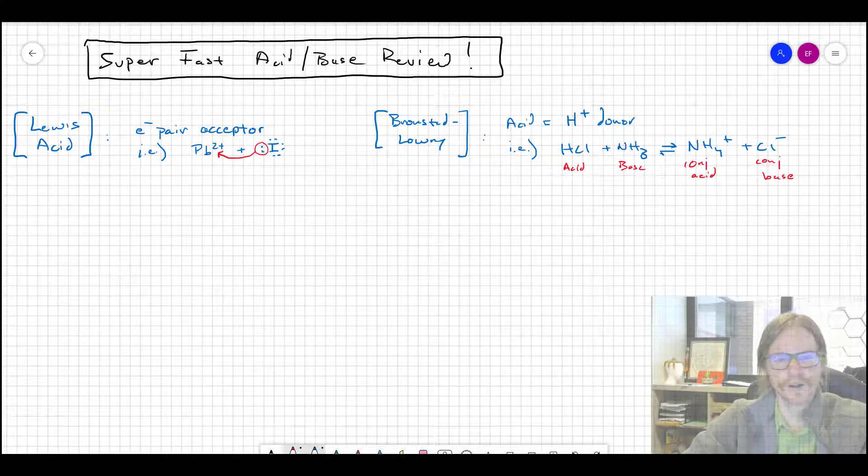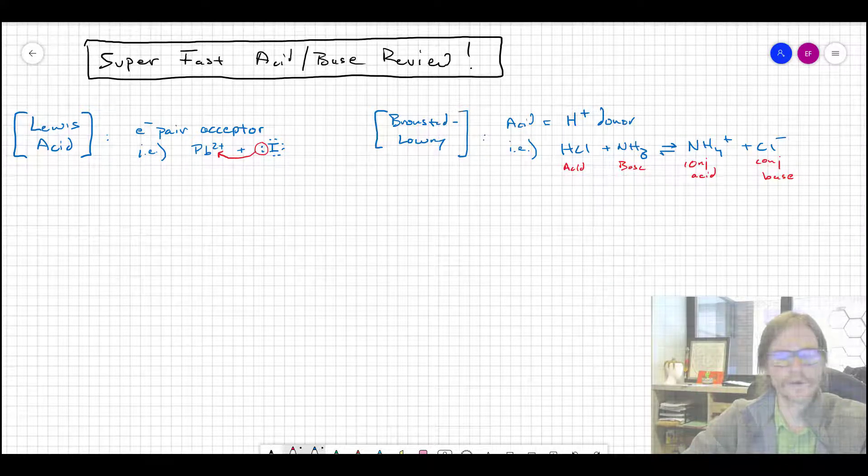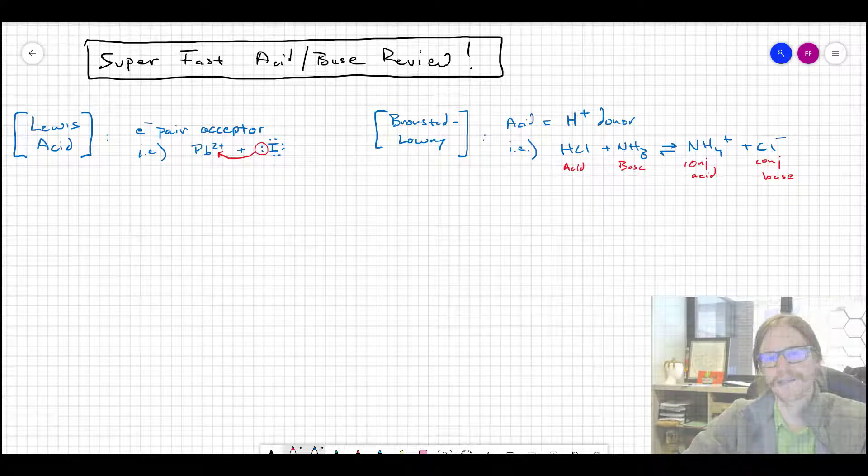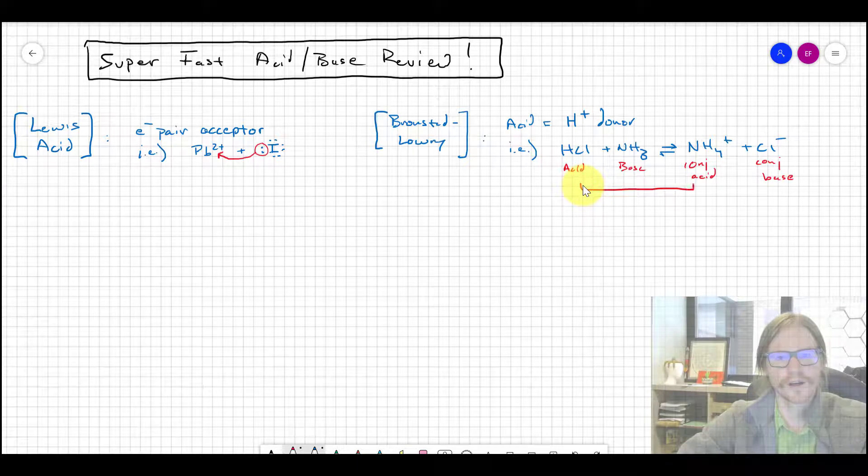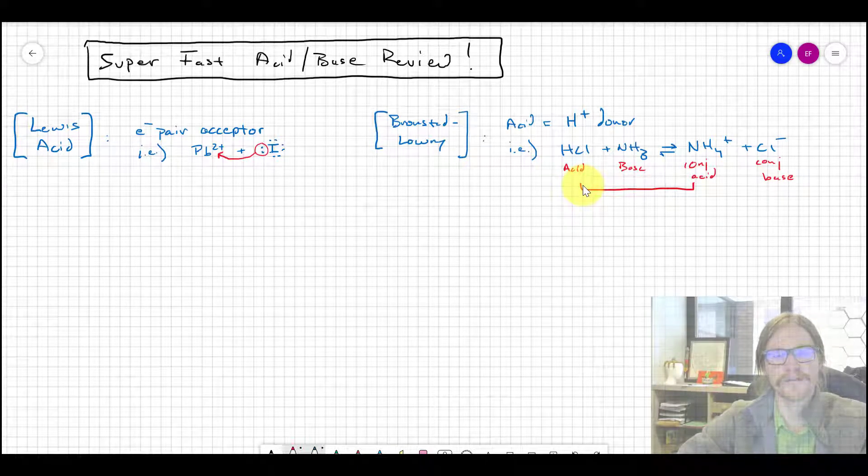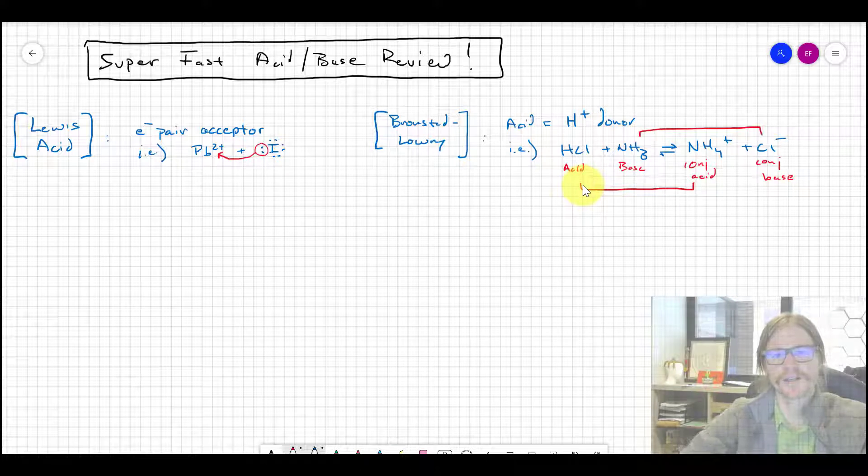Looking at the example, we have hydrochloric acid, HCl, a strong acid, reacting with ammonia NH3, a weak base, that produces NH4+ because the acid HCl is donating that proton. We relate the original acid to the new acid by calling it the conjugate acid. NH3 is the base and it has its conjugate base, the chloride.